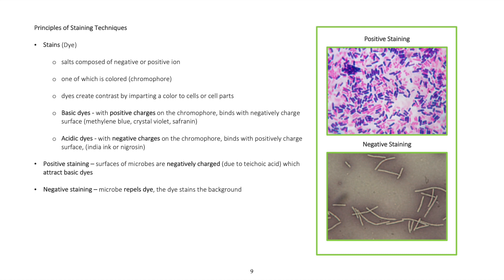Positive staining: surfaces of microbes are negatively charged due to teichoic acid, which attracts basic dyes. Negative staining: microbe repels dye, the dye stains the background.